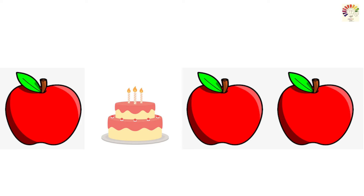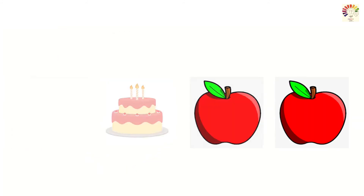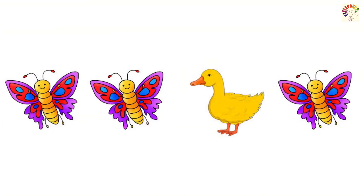Now let's see more examples. What is in this picture? Can you find out which is the different one? Look carefully and see which is the different one. Yes, the cake is different. How can you say the cake is different? Because all others are apples — they have same shape, same size and same color. But the cake is different size, different shape, different color. Got it children? You are enjoying the game? Let's see one more example.